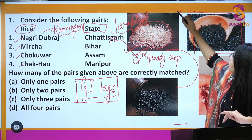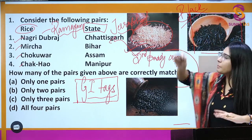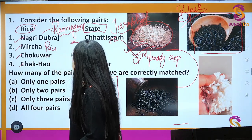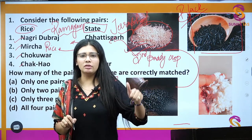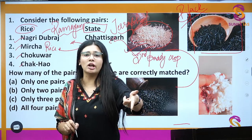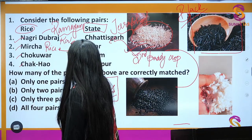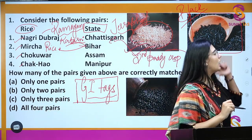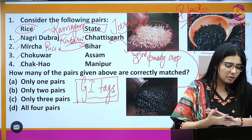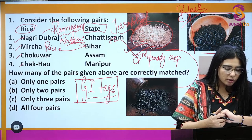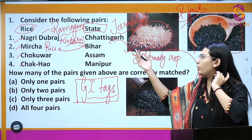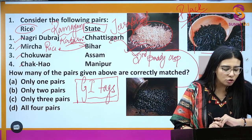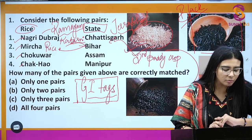The second rice is Mircha, which is black in color — hence the name resembling black pepper. This rice from Bihar has the GI tag. There is one more rice in Bihar with a GI tag: Katarni. Mircha belongs to the West Champaran district. It is not that critical to remember the district, but knowing the state Bihar and the rice variety Mircha matters.